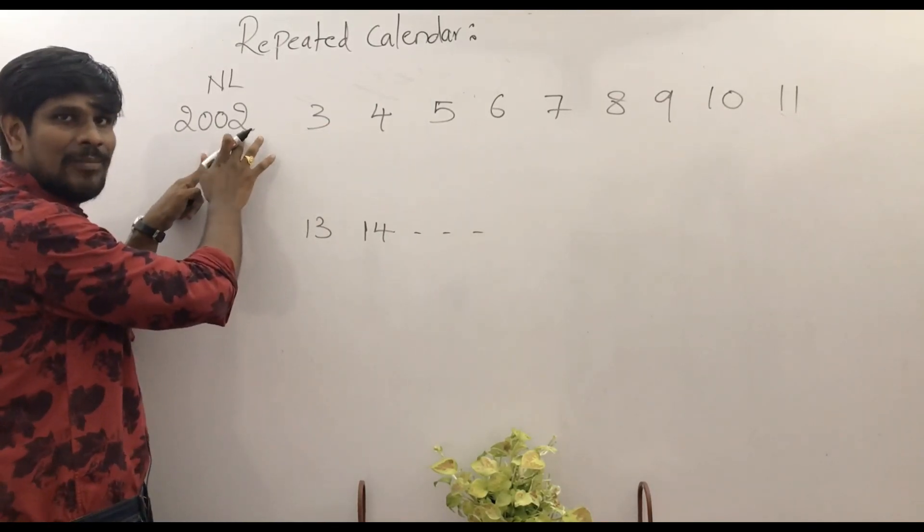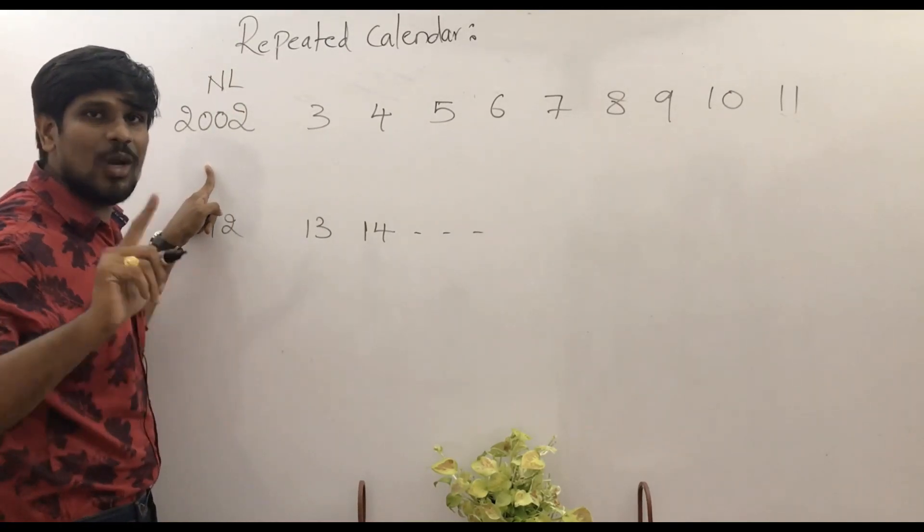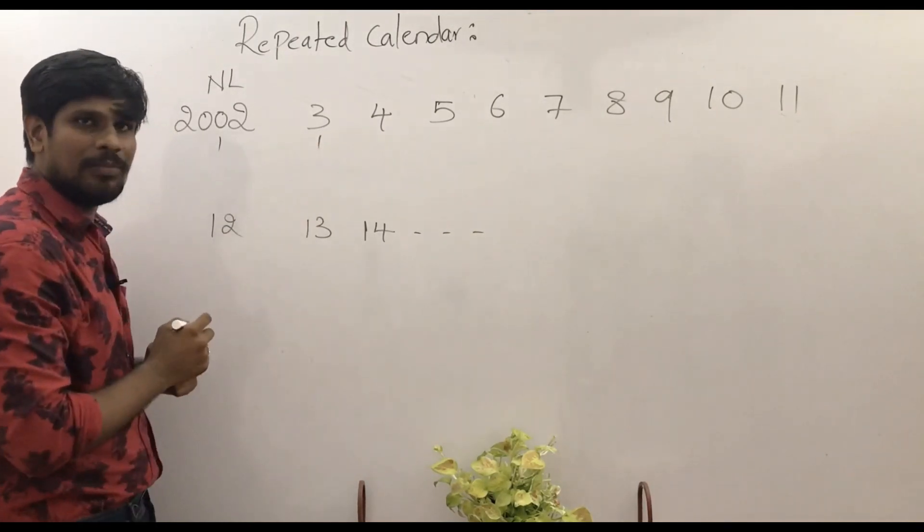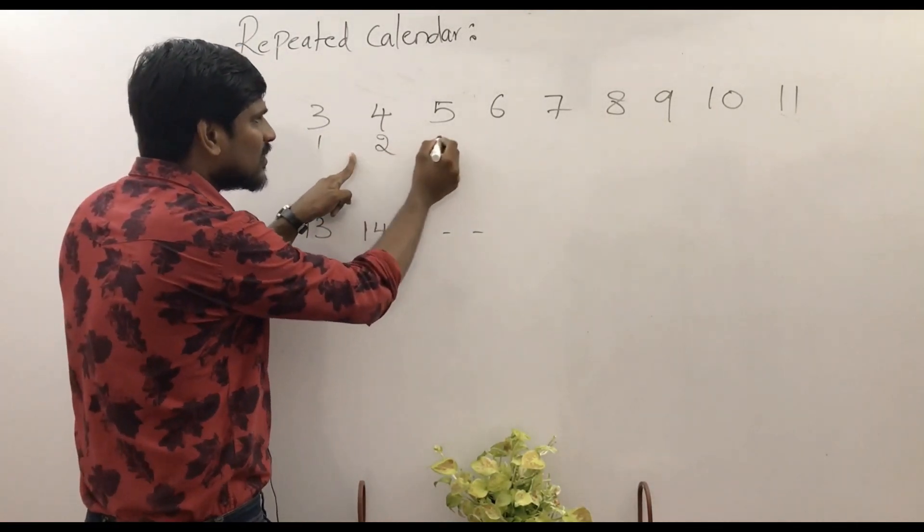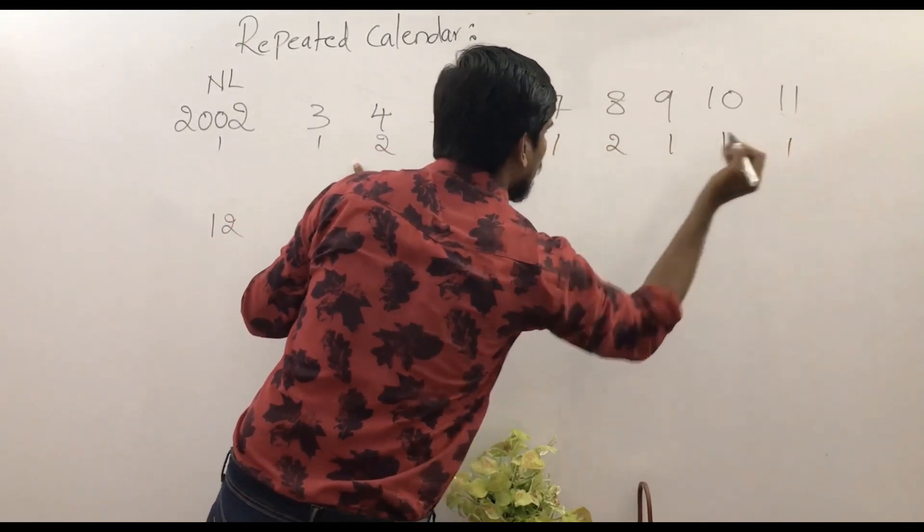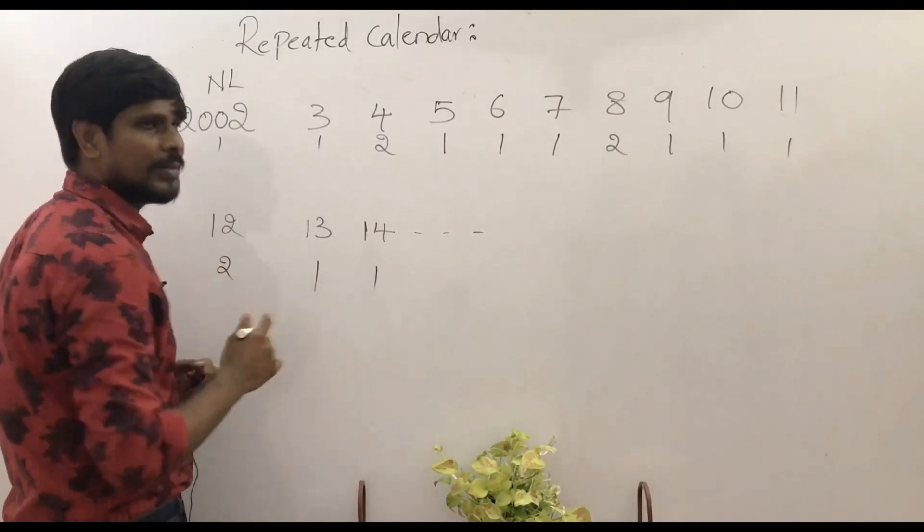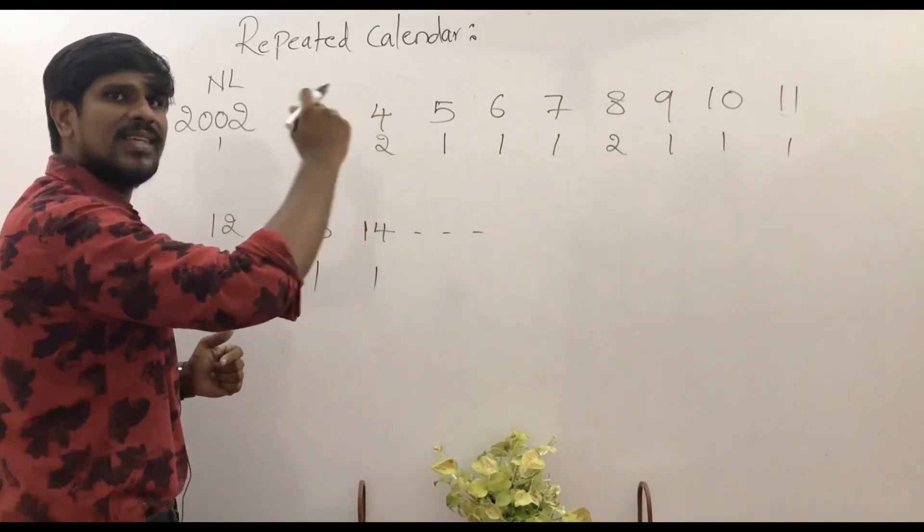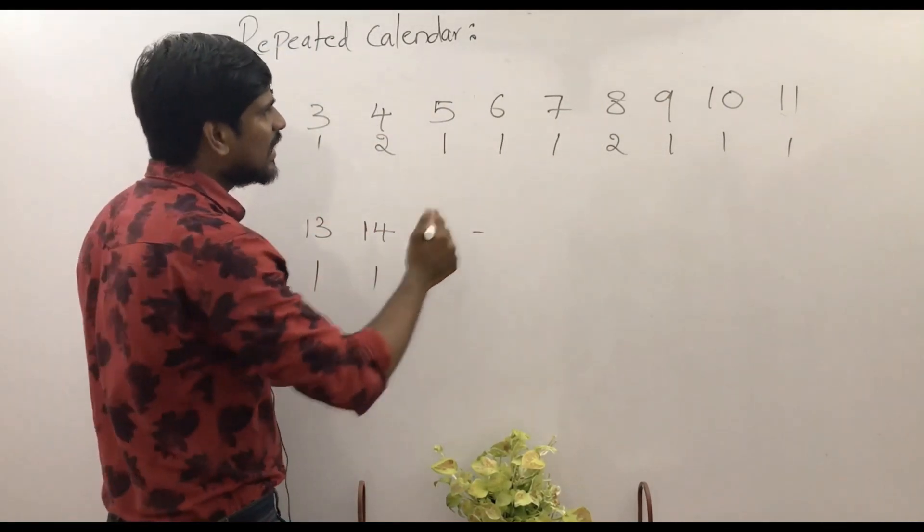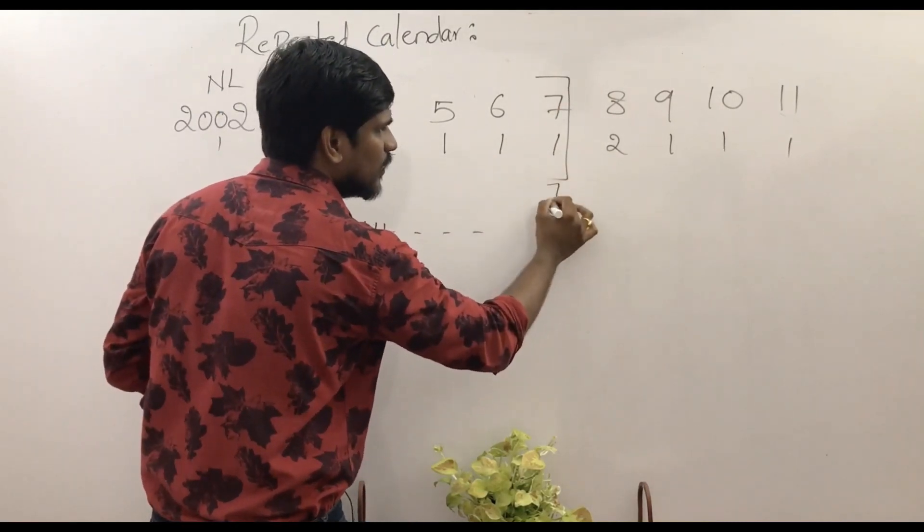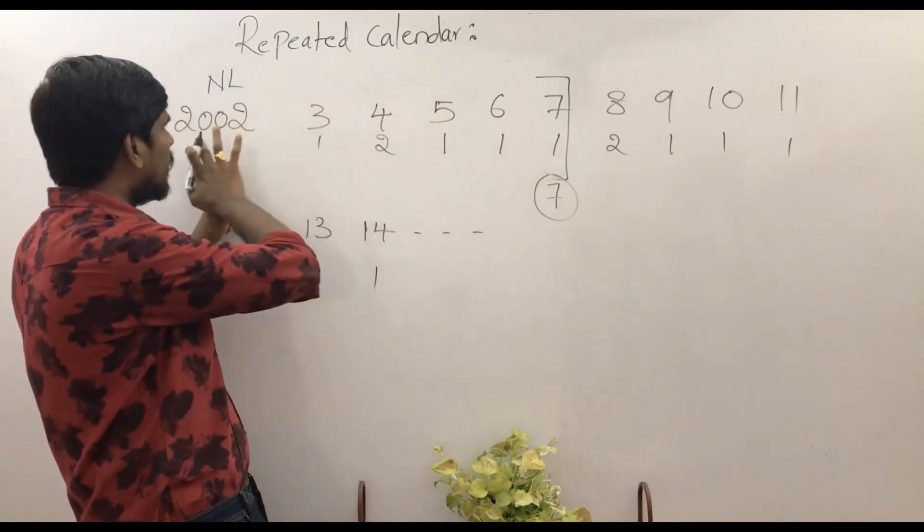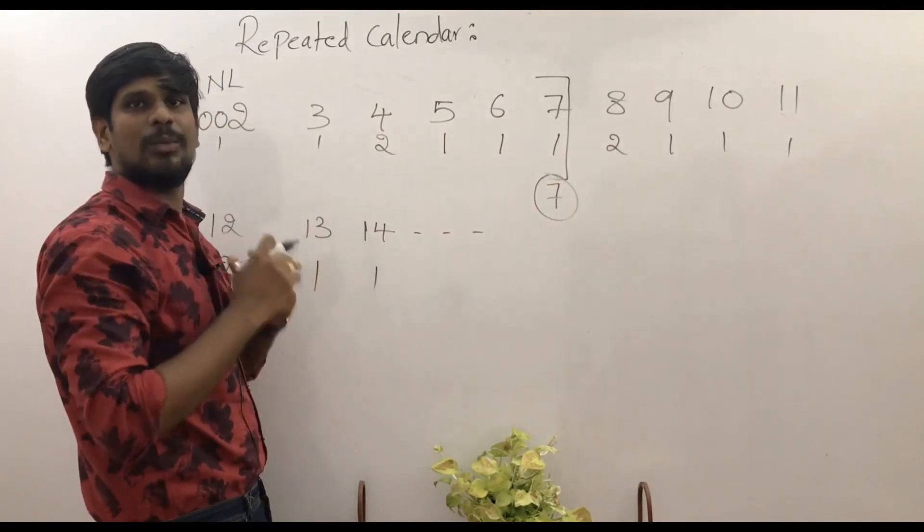In 2002, every non-leap year has one odd day. 2003 non-leap year is one odd day. 2004, we have two odd days. Here: 1, 1, 2, 1, 1, 1, 1, 2, 1, 1, 1. Now we add these odd days: 1 plus 1 is 2, 2 plus 2 is 4, 5, 6, 7. 7 odd days is 0 number of odd days. From 2002 to 2007, we have 0 number of odd days.